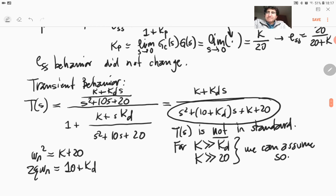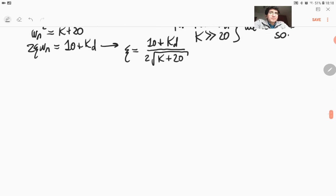So we can also calculate the damping ratio from here. The damping ratio comes out as 10 plus KD over 2 times square root of K plus 20. So let's see what that means for us. Now if we look at the damping ratio, we see that if you increase K, you will decrease the damping ratio. That means the effect of K on the overshoot, the maximum overshoot is still the same. If you increase K, you will reduce the steady state error, but you will start increasing the maximum overshoot.